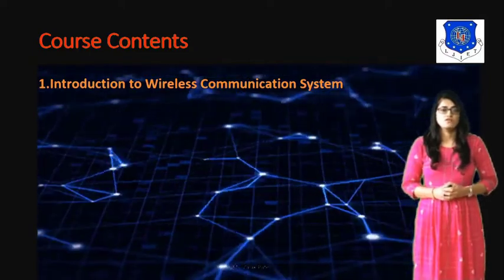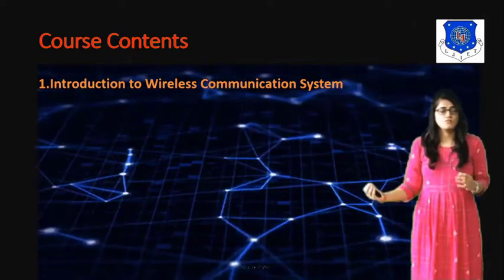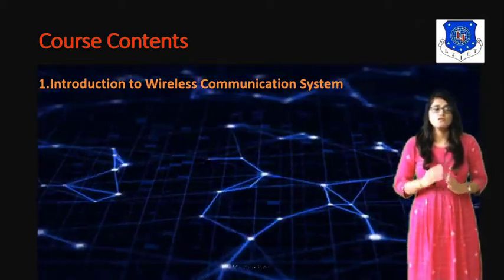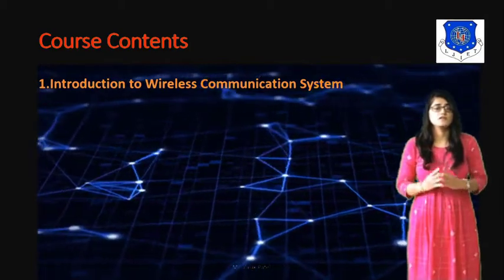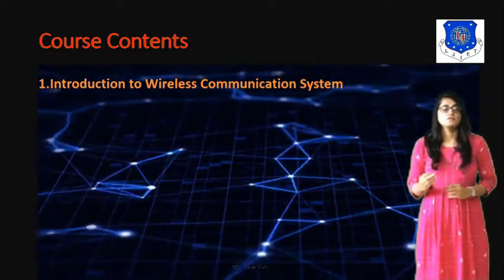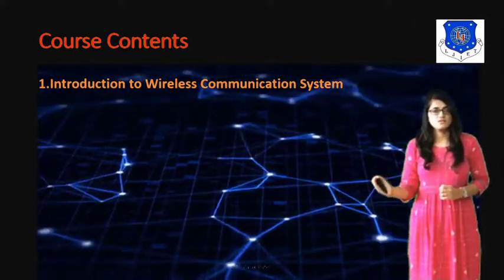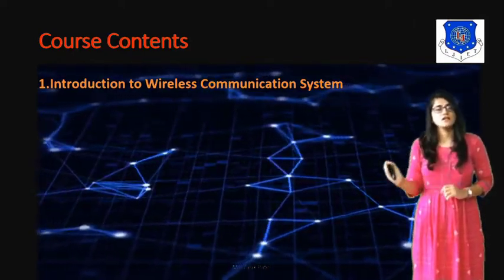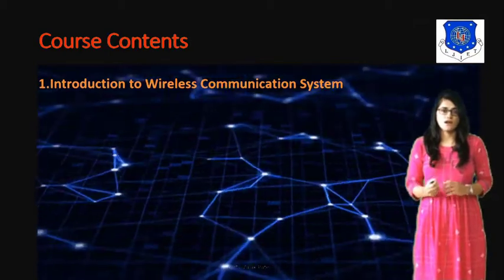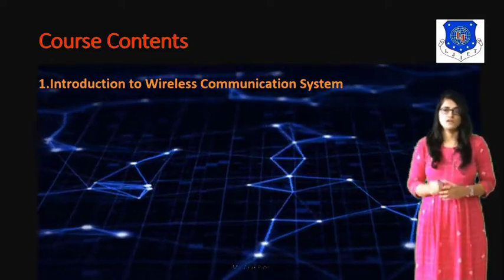Later on, we discuss the different associated techniques of wireless communication and different generations of wireless communication based on analog and digital communication. This includes the first generation standard, then different second generation standards such as GSM (Global System for Mobile), then the 2.5G standard GPRS (General Packet Radio Service) and EDGE (Enhanced Data rates for GSM Evolution), and lastly the 3rd generation wireless communication — CDMA-2000 and WCDMA. These are all covered in Unit 1.